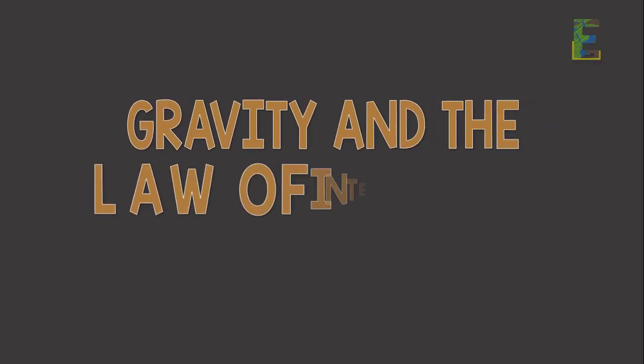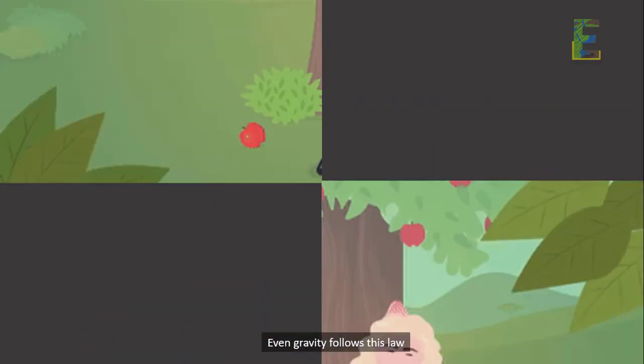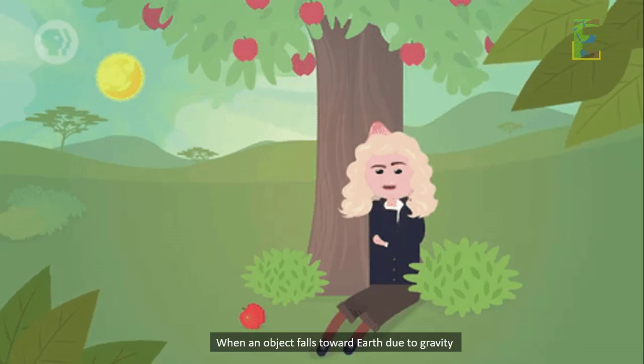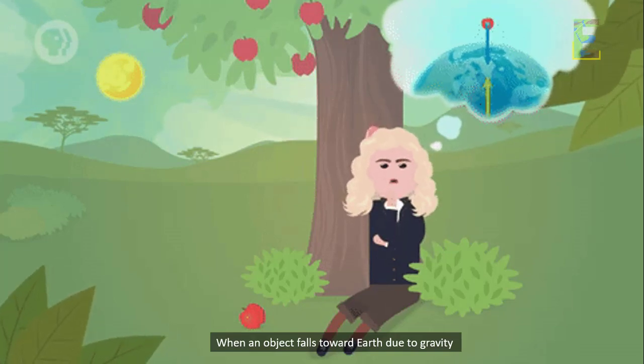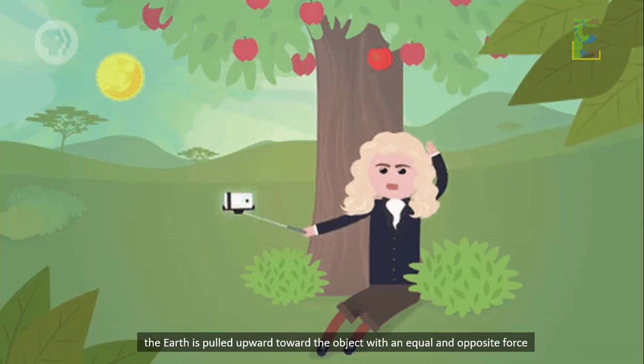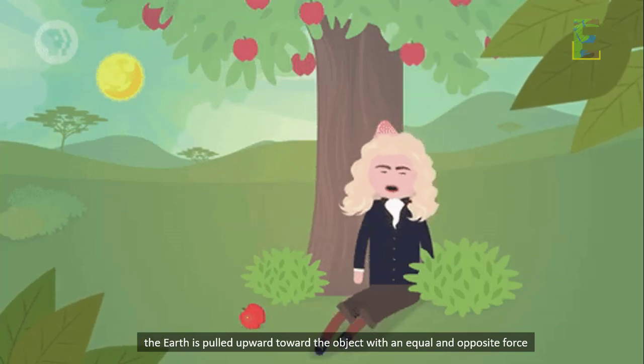Gravity and the law of interaction. Even gravity follows this law. When an object falls toward Earth due to gravity - action - the Earth is pulled upward toward the object with an equal and opposite force - reaction.